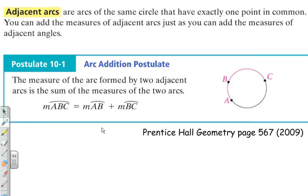Postulate 10-1, Arc Addition Postulate: the measure of the arc formed by two adjacent arcs is the sum of the measures of the two arcs. Here we have the measure of arc ABC, that would be this major arc here.